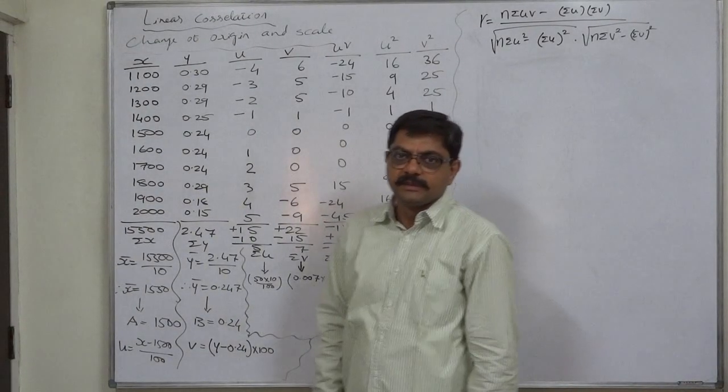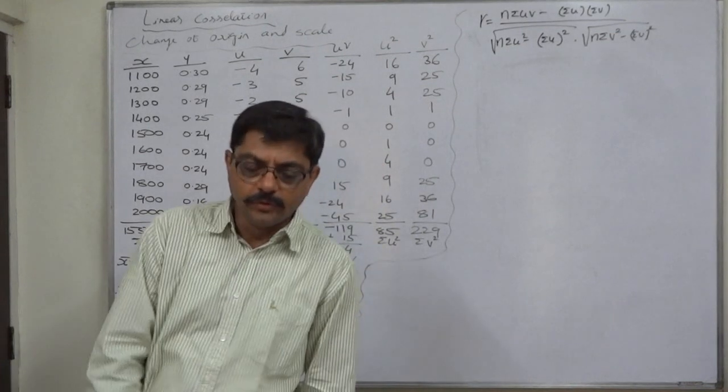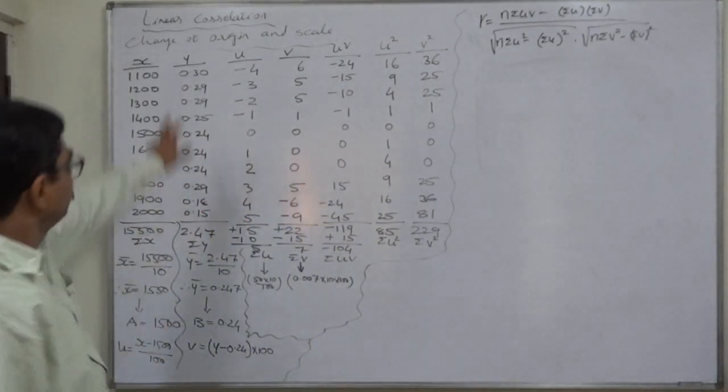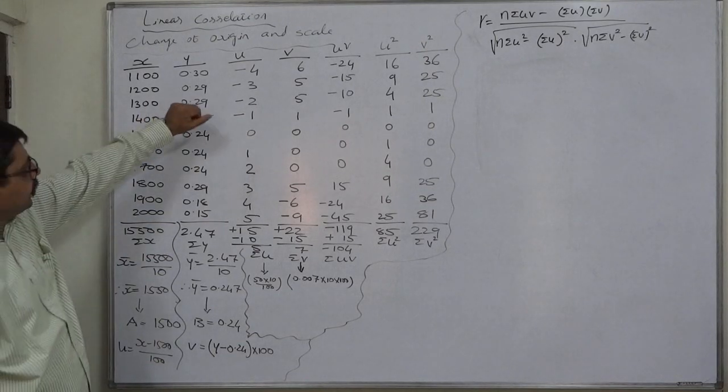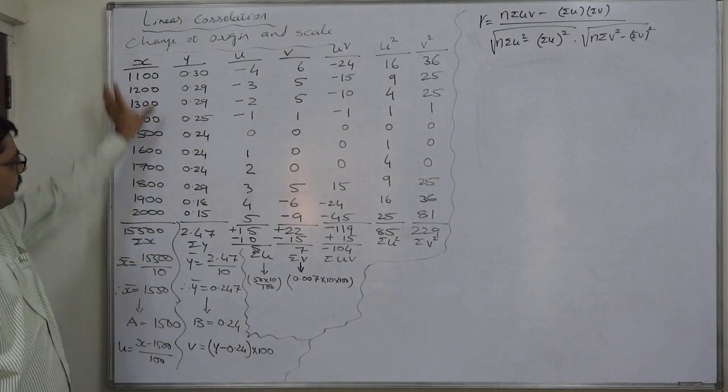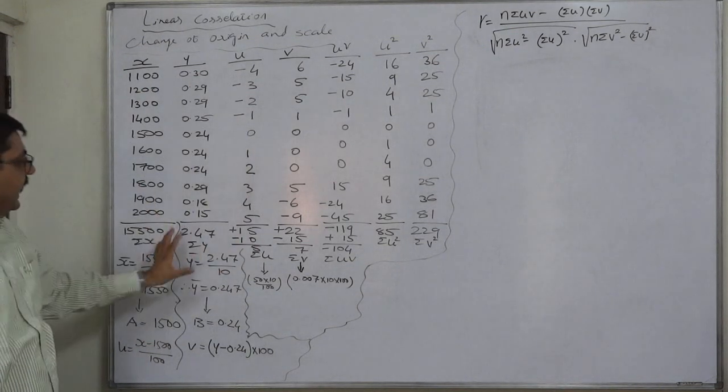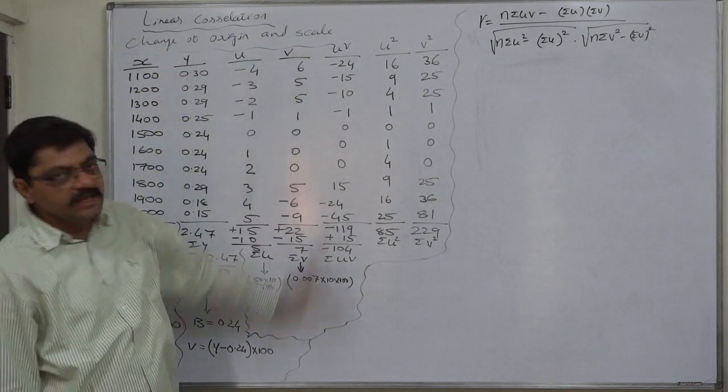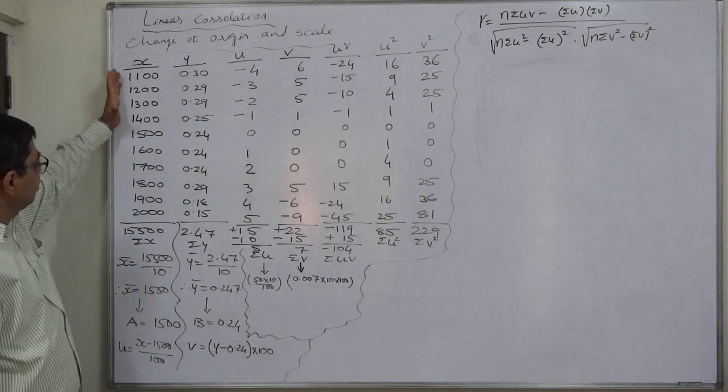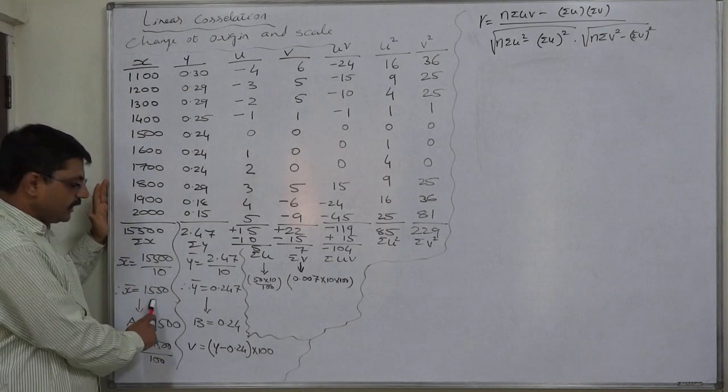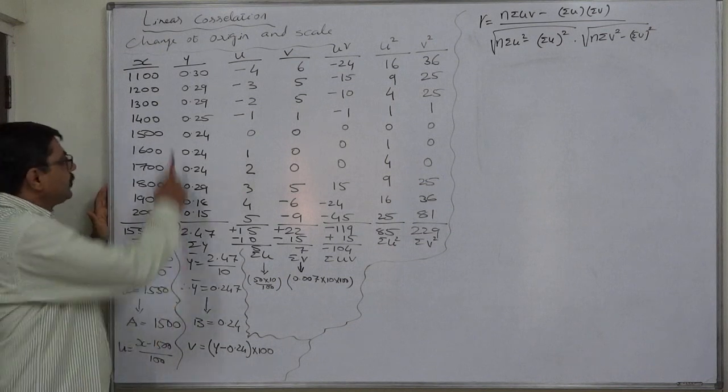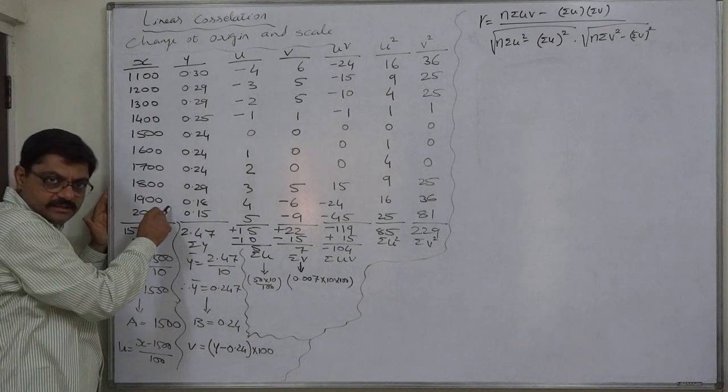Hello and welcome. This is the last case of using the property related to change of origin and scale. This time we're going to use the same property to make greater values comparatively smaller and very small values comparatively greater. X is in hundreds and thousands; the summation is 15,500, mean is 1,550, but all the values are in hundreds.